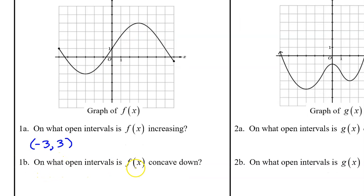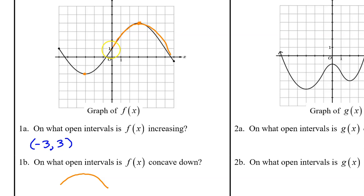1b. On what open intervals is f of x concave down? We are looking for where f of x makes an upside down bowl shape, like an umbrella. It's concave up in the first part, then switches to concave down somewhere around x = 0, which we estimate is the point of inflection. Looking at input values only, f of x is concave down on the interval from zero to seven.